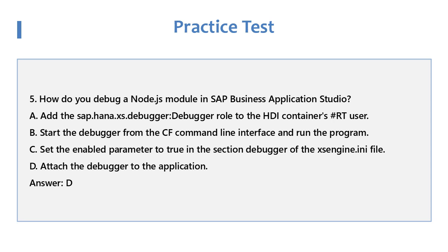Question 5: How do you debug a Node.js module in SAP Business Application Studio? A. Add the SAP HANA XS Debugger role to the HDI Container's RT User. B. Start the Debugger from the CF Command Line Interface and run the program. C. Set the Enabled Parameter to True in the Debugger section of the XSEngine.ini file. D. Attach the Debugger to the Application. Answer: D.